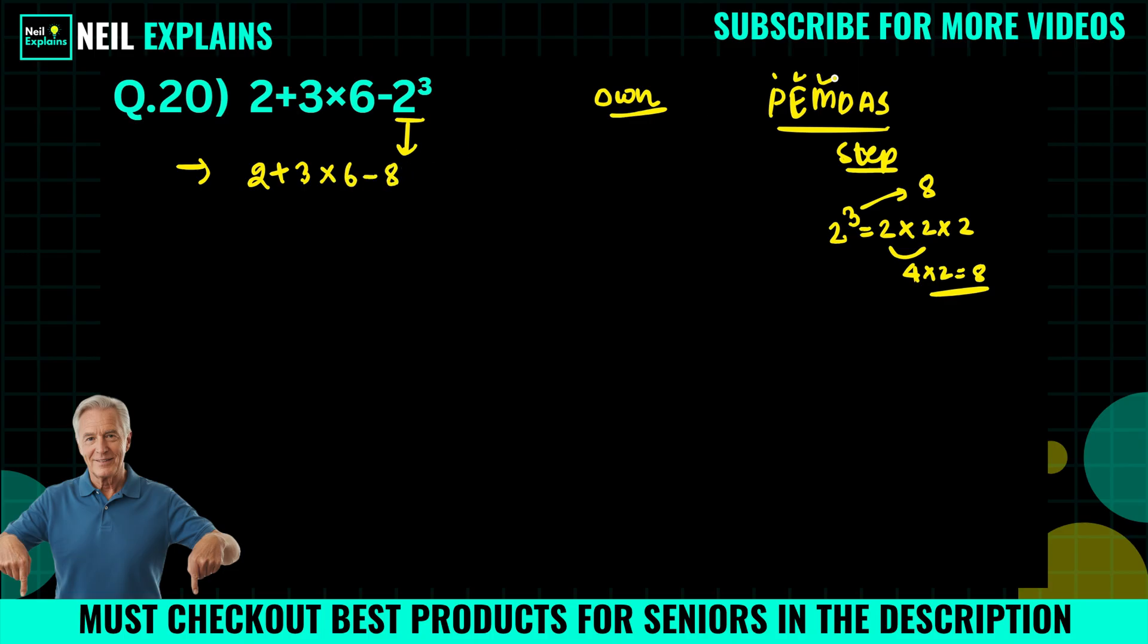Now next preference will be given to multiplication. So we will operate multiply. We will write 2 plus 3 times 6 which equals 18 minus 8. Now there is no division, so next preference will be given to addition.